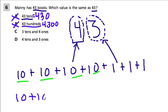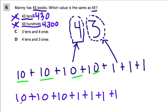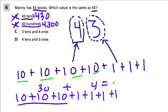Three tens and four ones would be 10 plus 10 plus 10 plus 1 plus 1 plus 1 plus 1. Add 30 and 4, you get 34. But we don't have 34 — that's the reverse of what we have. We have 43.